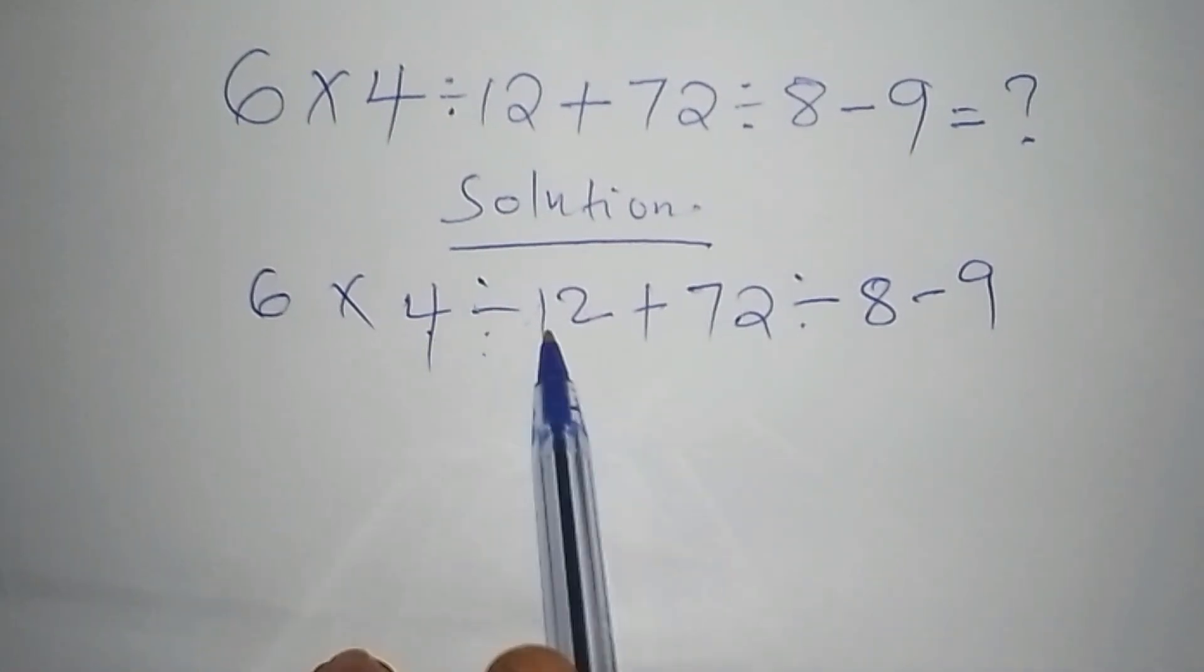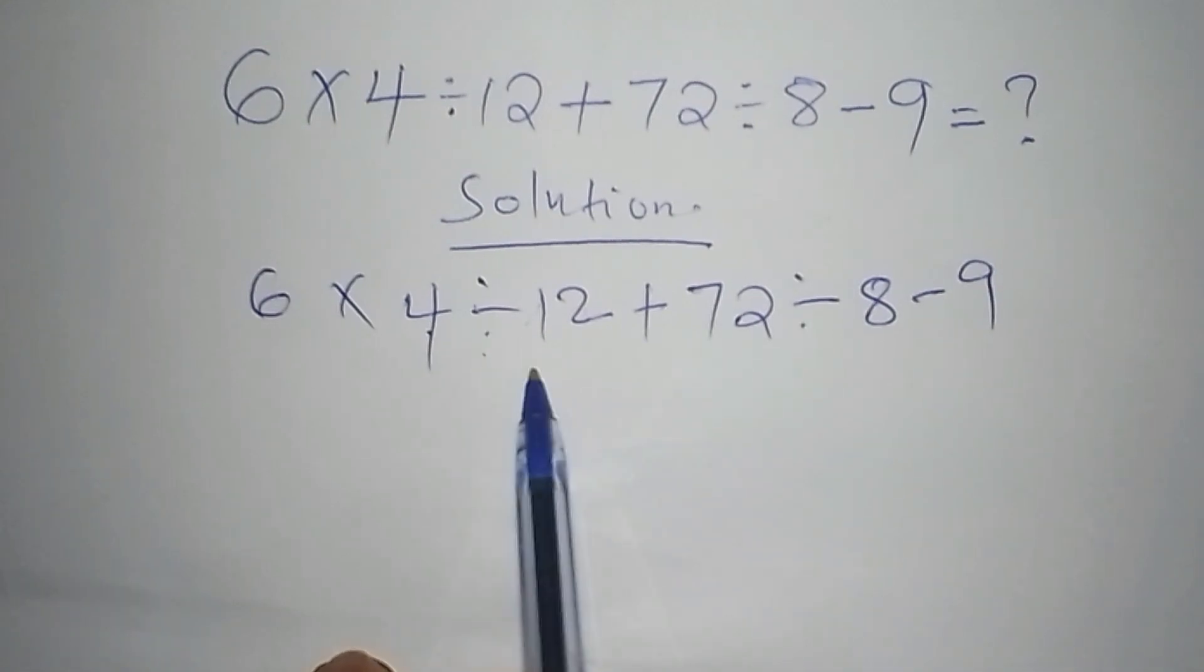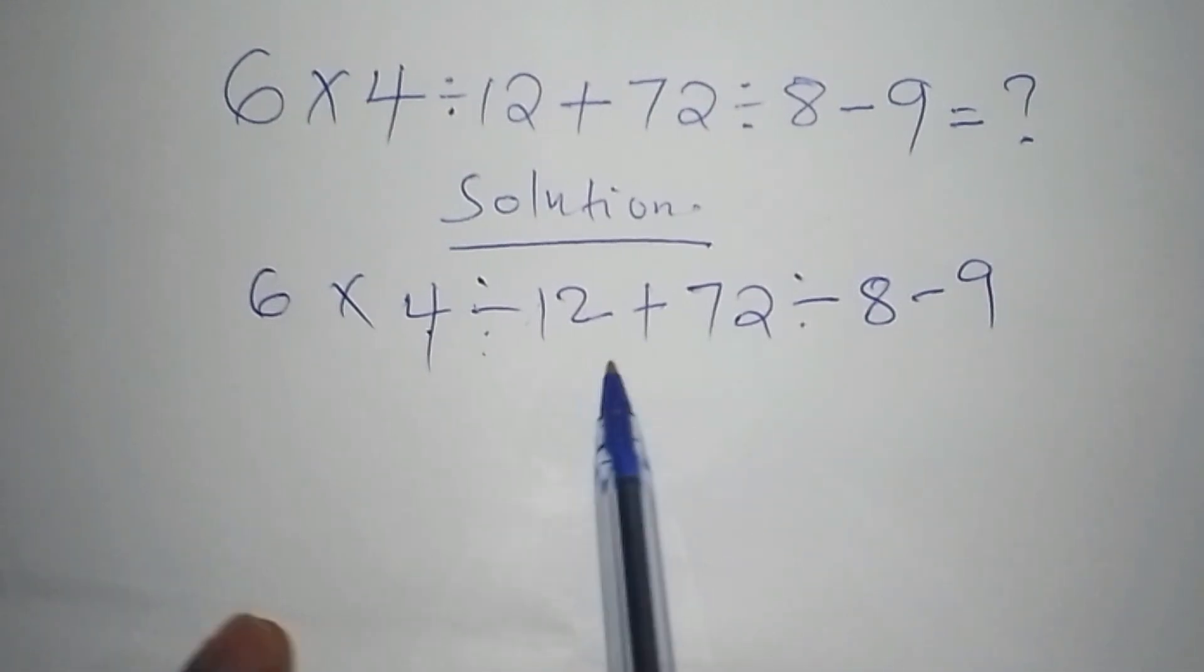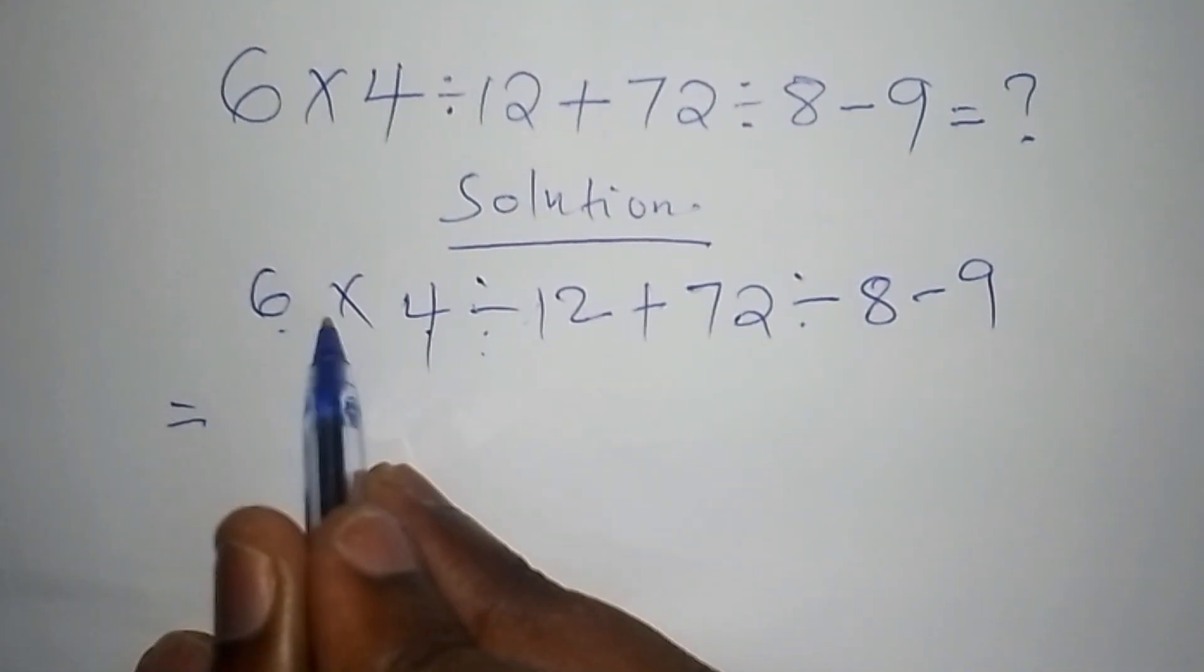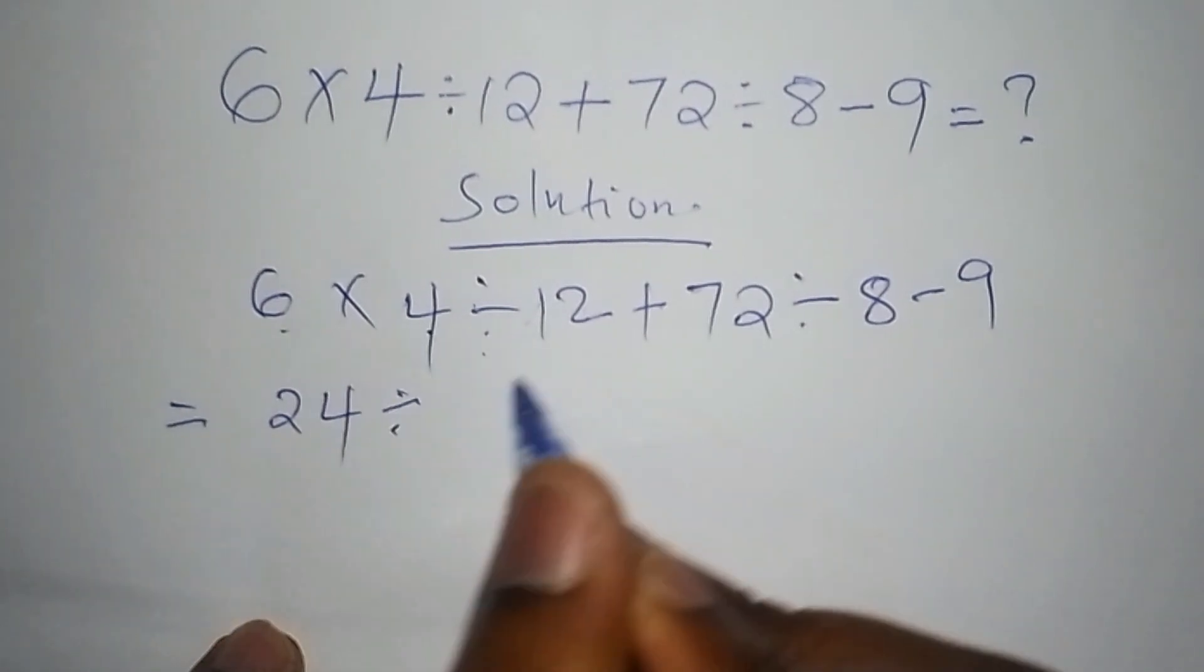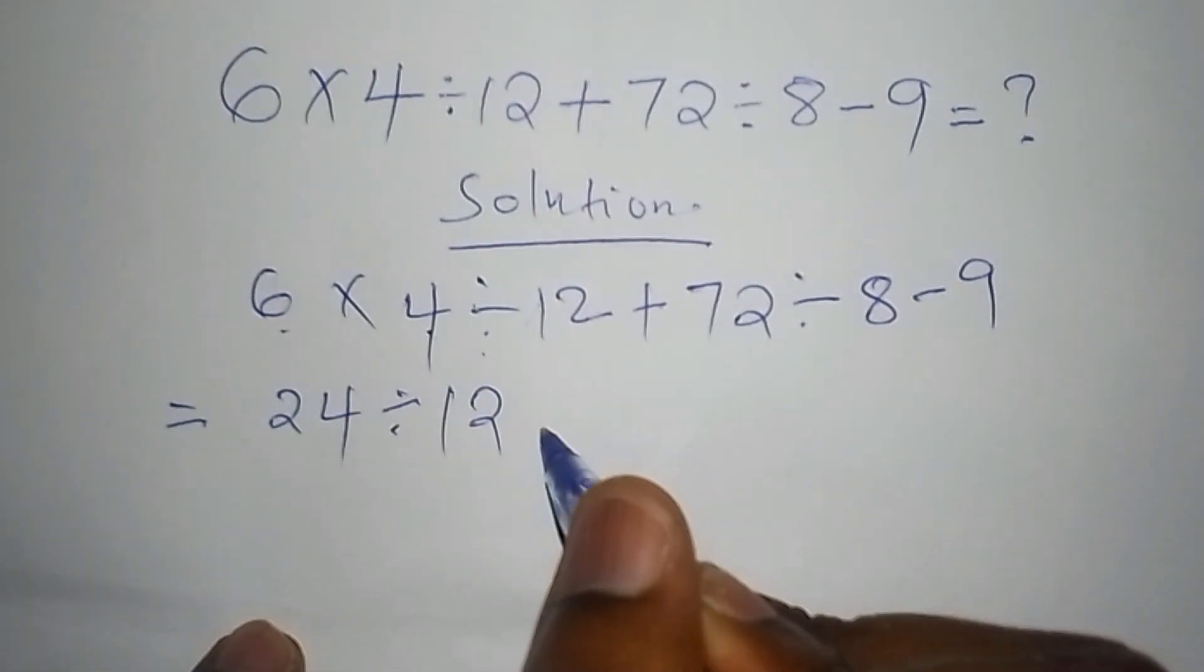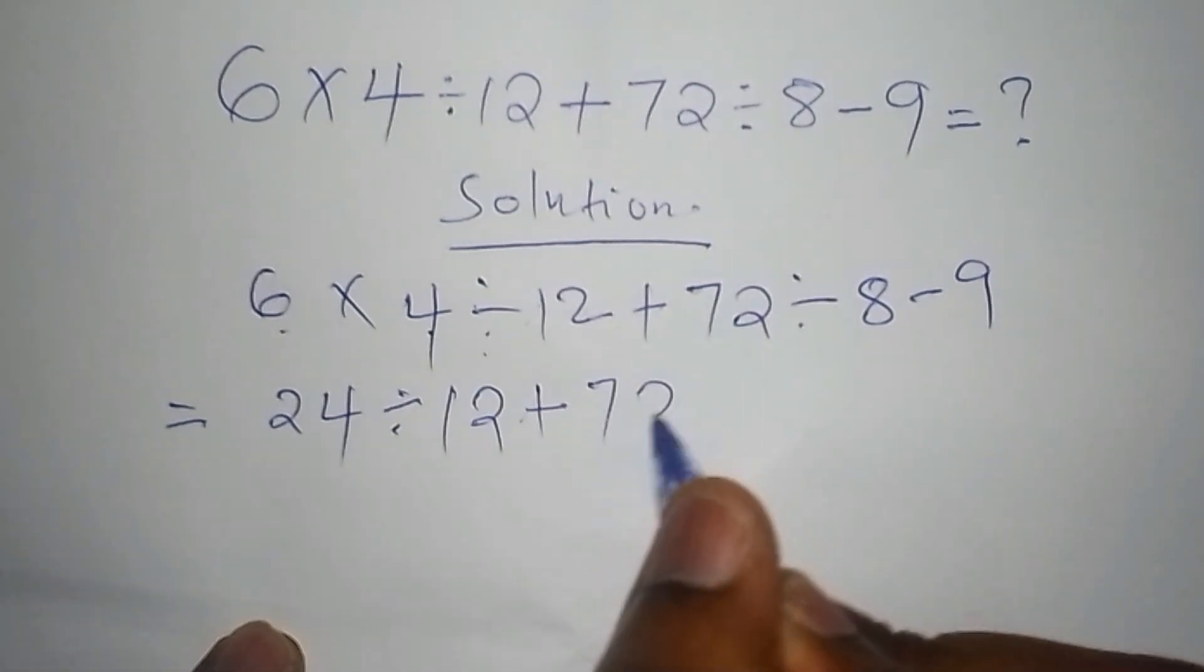When you take 4 divided by 12, we might encounter some decimals that you don't want to deal with at this particular time. So let's say now, the first step: we shall say 6 multiplied by 4, we shall have 24. So 24 now divide by 12, then from there add to 72, then divide by 8 minus 9. So that's the first step.